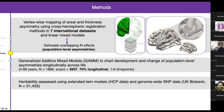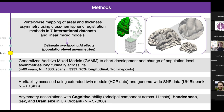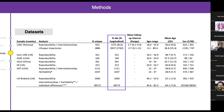We also assessed heritability using both twin data from the Human Connectome Project and genome-wide SNP data in UK Biobank with about 31,000 people. To test asymmetry associations with cognition, we used the principal components across 11 cognitive tests in UK Biobank and also tested associations with handedness as a binary variable, sex, and brain size in 37,000 people.